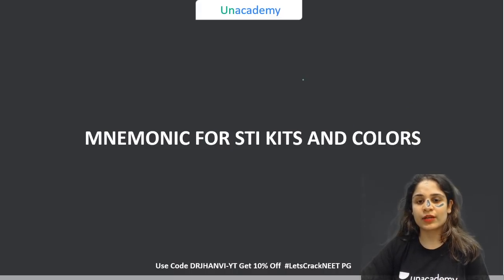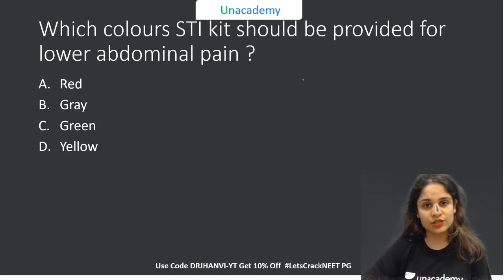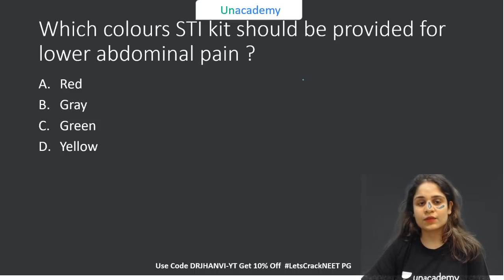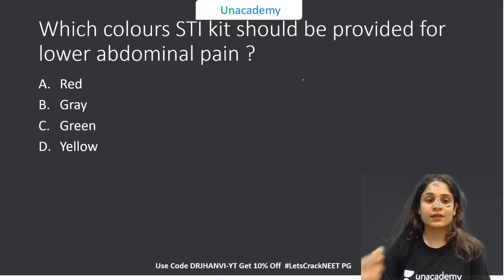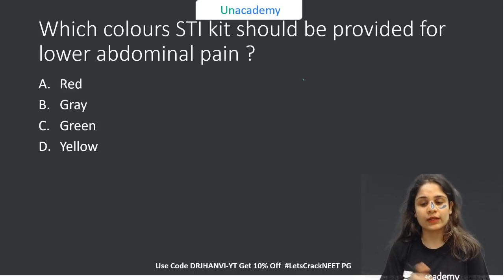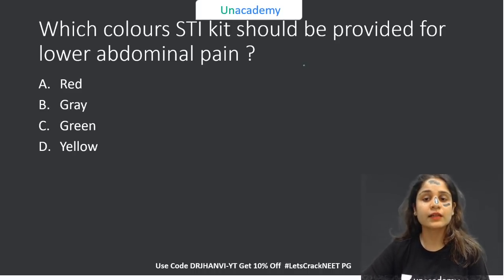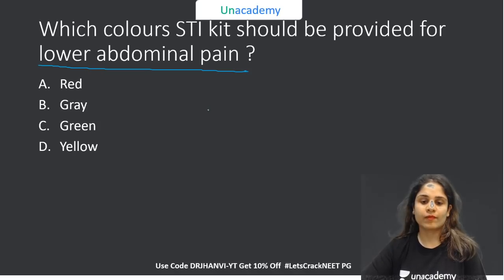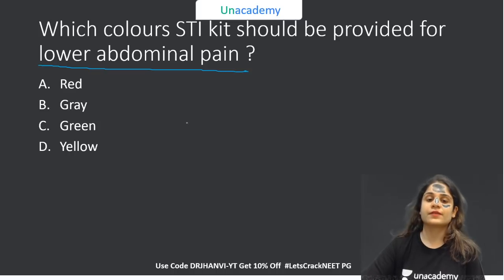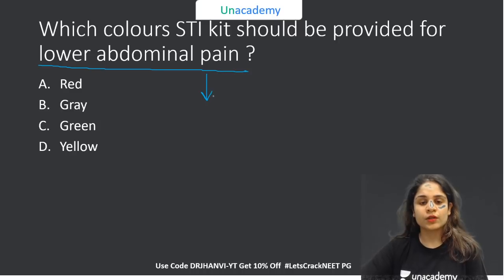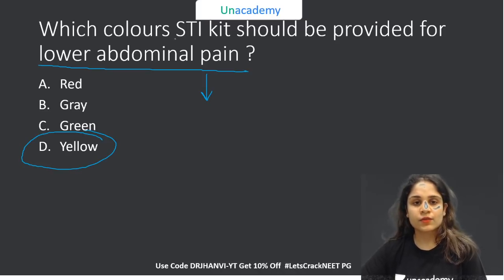Let's begin with our mnemonic for STI kits and colors. As usual, we start with a question: which color STI kit should be provided for lower abdominal pain? Is it the red, gray, green, or yellow colored kit? Answer in the chat box. The correct answer is the yellow kit — whenever we consider lower abdominal pain, we think of pelvic inflammatory disease.